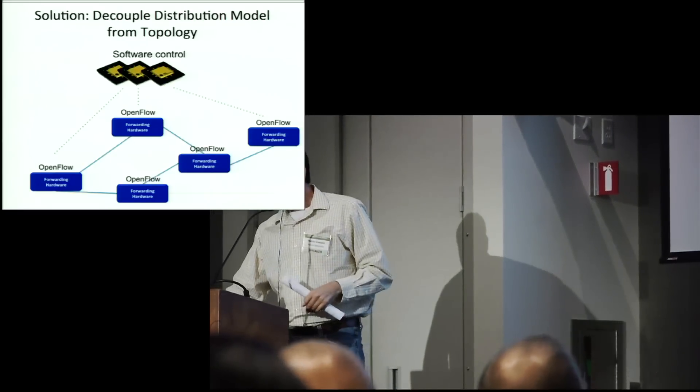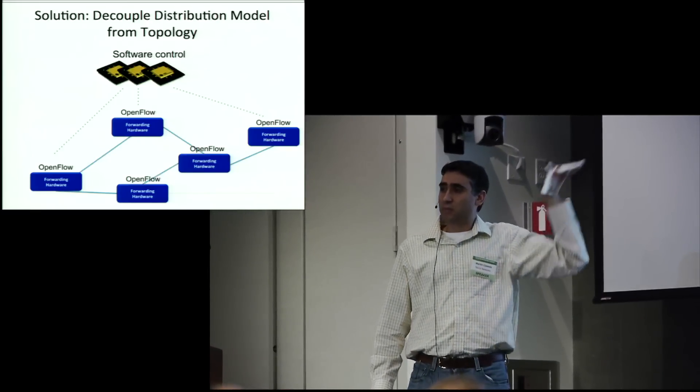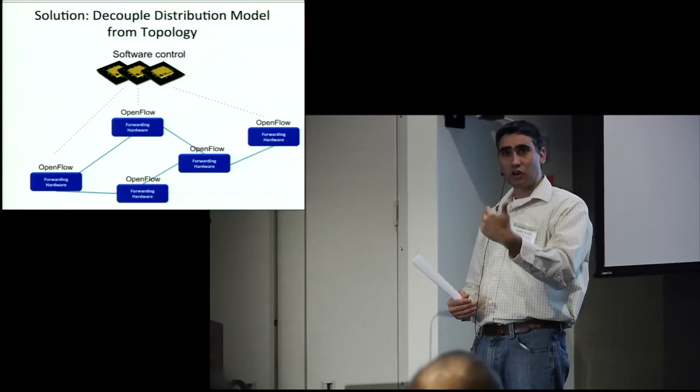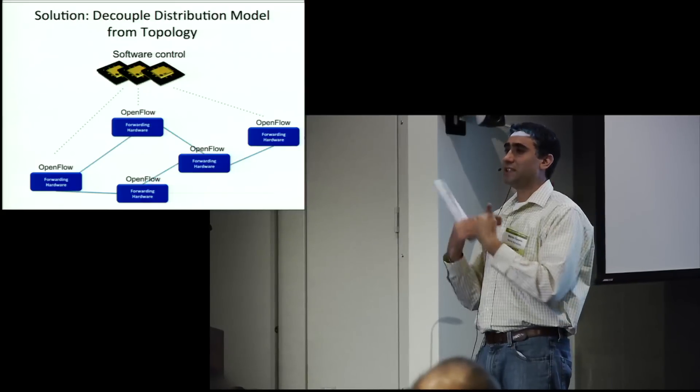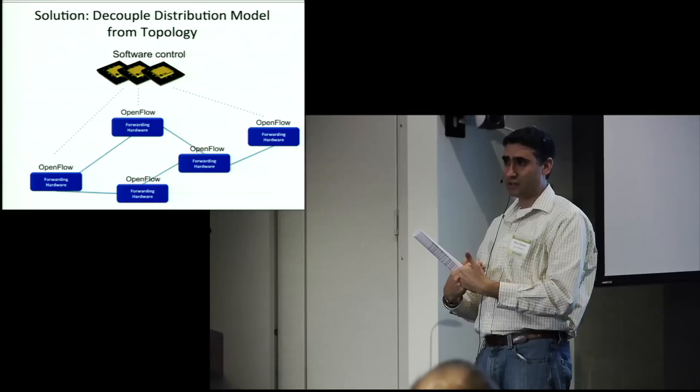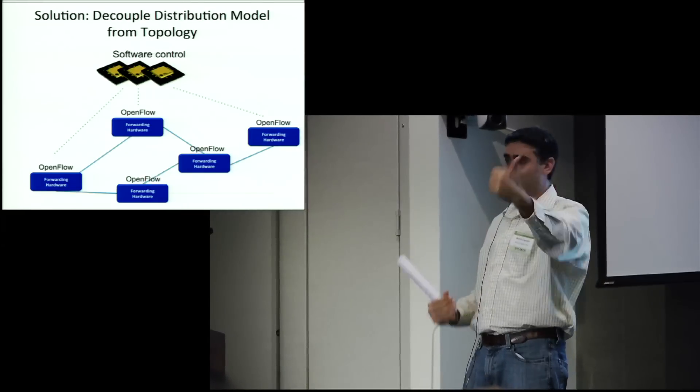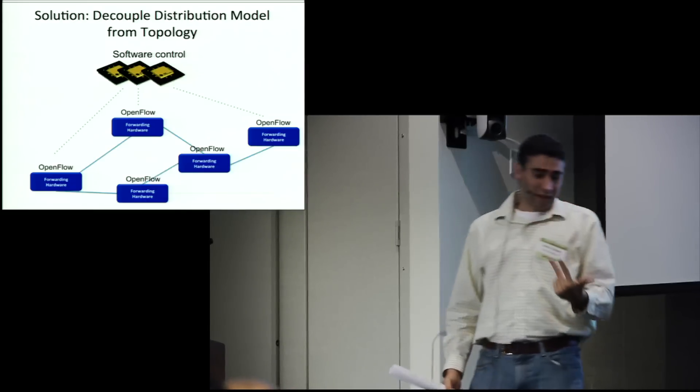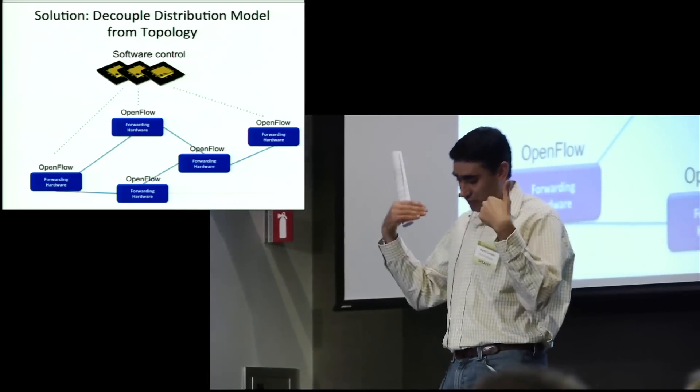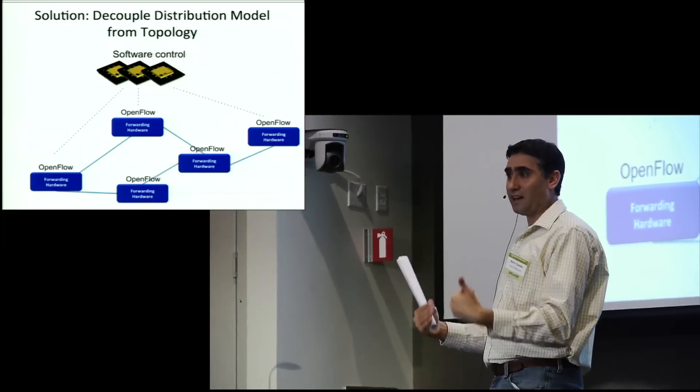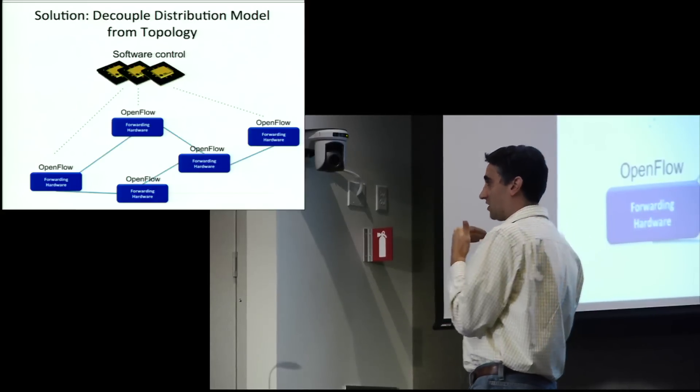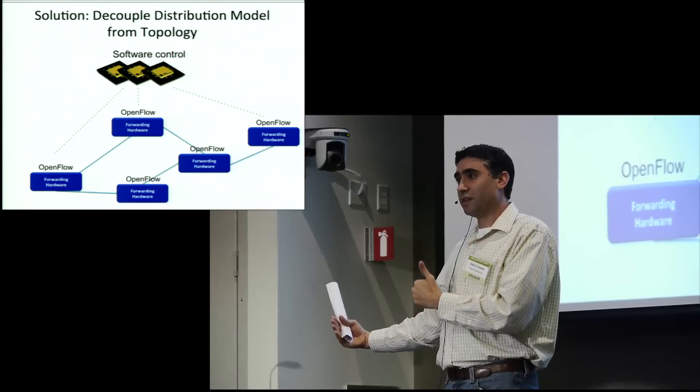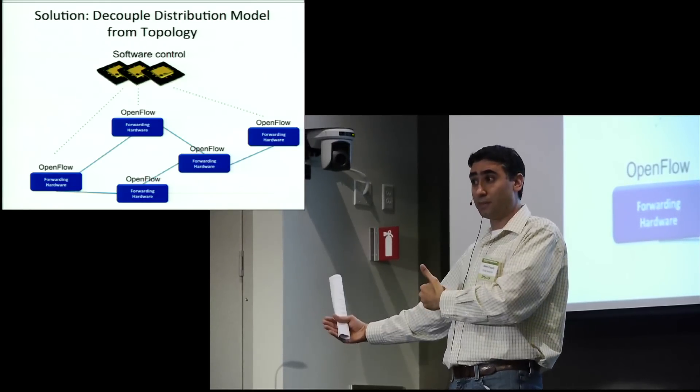And so the second step, the first step, we generalize the data path. The second step was just simply to decouple the software control distribution model from the topology. So I know we hear the term centralization thrown around a lot and logically centralized, but I'd like to encourage you to think about this a little bit differently. What OpenFlow and SDN does is it allows you to decouple the distribution model of your control logic from the physical topology. And that control distribution model can be anything you want. It can be purely distributed if you want. That's fine. I think that's hard to program to, but it's totally fine. It can be totally centralized if you want. Or it can be something in between. And when we know from industry, if you look at how Google or Amazon or Yahoo build data centers, they use tightly coupled distributed systems that handle hundreds of thousands of servers and petabytes of data, and it scales just fine.